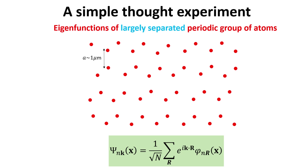We conclude that the Bloch states for electrons in the initial system with largely separated ions can be written in terms of the atomic orbitals around each individual atom composing the system. We are now ready to bring the atoms together to their typical distances in real crystals and analyze the relation between plane wave-like Bloch states and atomic orbitals.